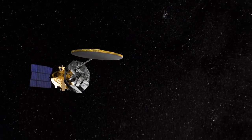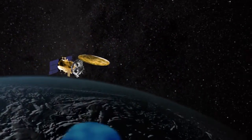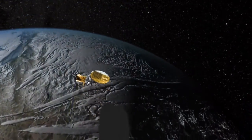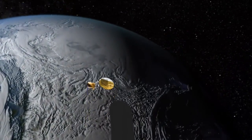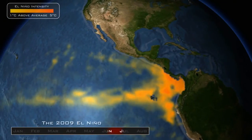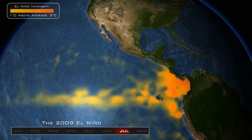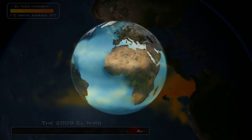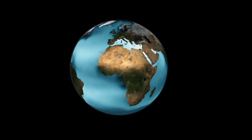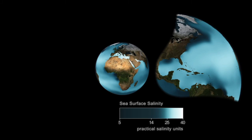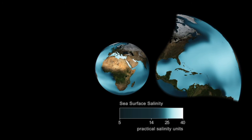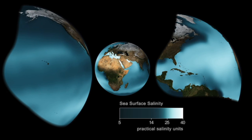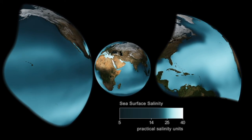Aquarius will measure the salinity in the ocean, giving scientists the tools needed to improve predictions of future climate trends and events like El Nino. Until now, researchers did not have a full set of data on ocean salinity and how it impacts climate change.